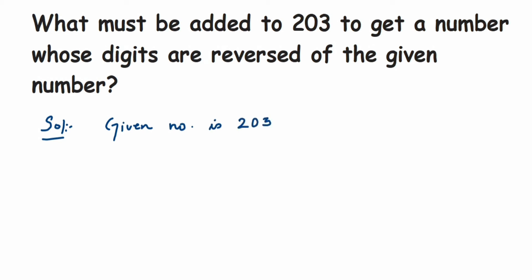What we're going to do here is subtract 302, which is the reverse of 203, and subtract the original number. So when I subtract this, since we cannot subtract 2 from 3, it will take a borrow from 0.